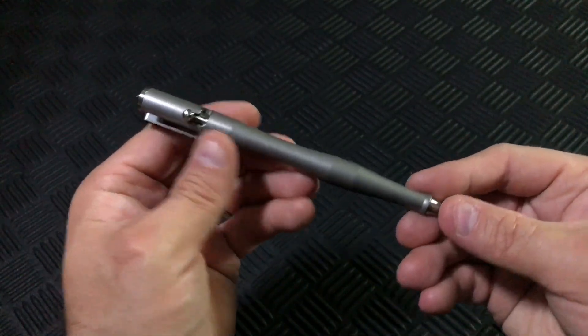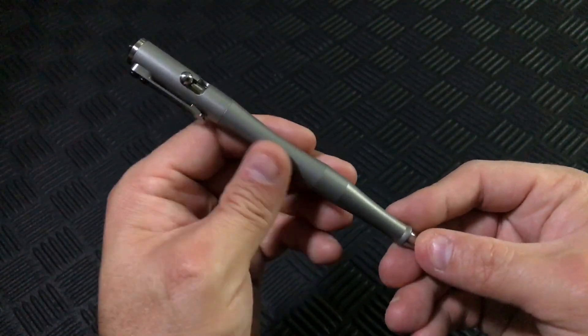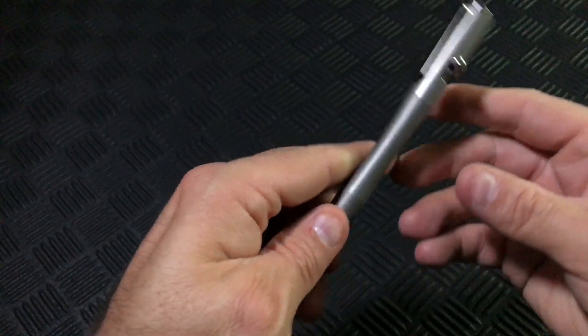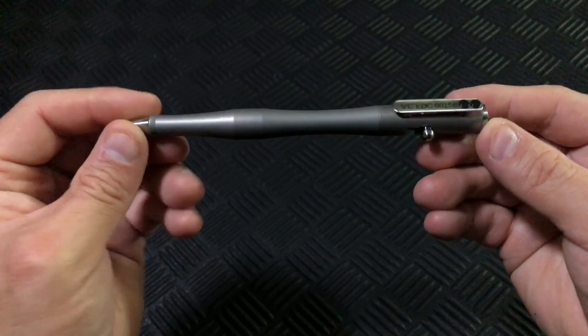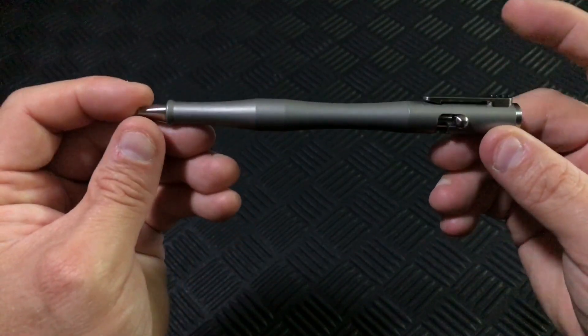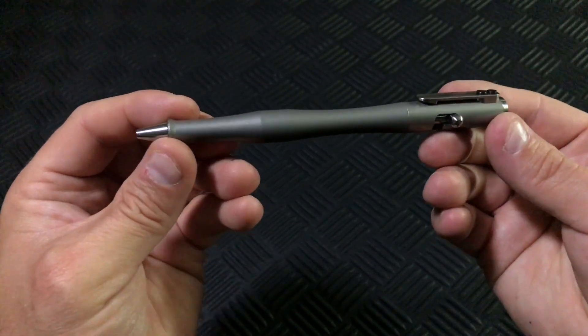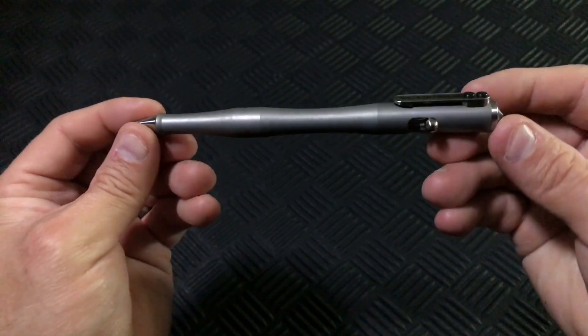The Dark Zero is made from grade 5 titanium, so it is incredibly durable. This one is the media blasted finish, but you can also get it in machine finish or with blue accents on these silver areas. Personally, I find the media blasted with these silver accents to look really great.